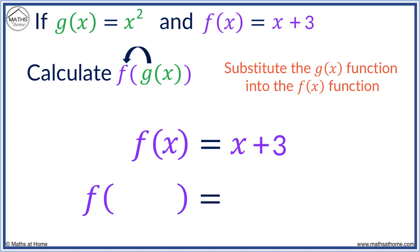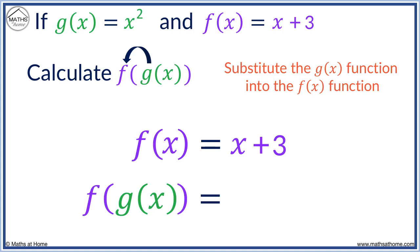To find f of g of x, the x has been replaced with g of x. This means that every x in the f of x equation must be substituted with g of x, which for us is x squared. Instead of x plus 3, we have x squared plus 3. We replaced x with g of x.